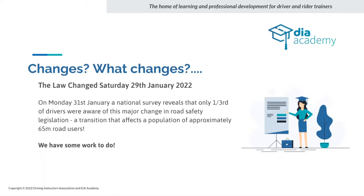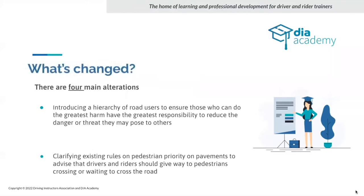We've got a lot of work to do ourselves to understand what's going on. Let's go to the four main alterations. We've got the hierarchy of road users to ensure those who can do the greatest harm have the greatest responsibility to reduce the danger they may pose to others. The problem is putting this onus on lorry drivers — the government is trying to recruit lorry drivers into the industry, and this won't help.